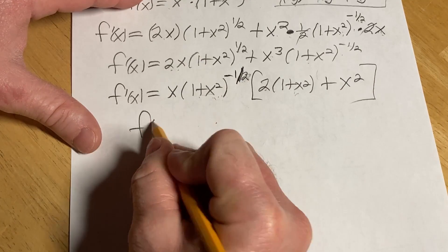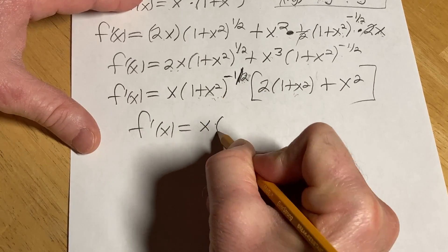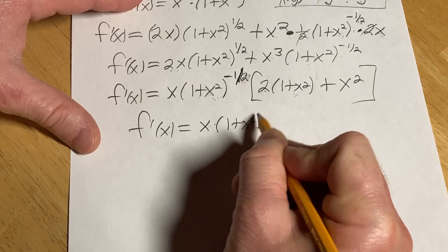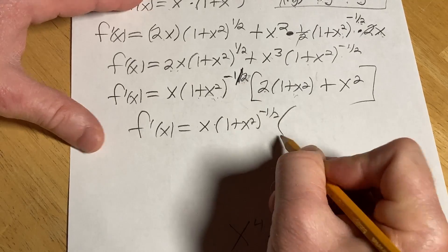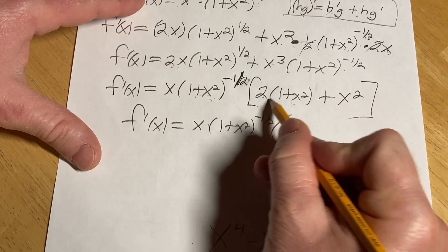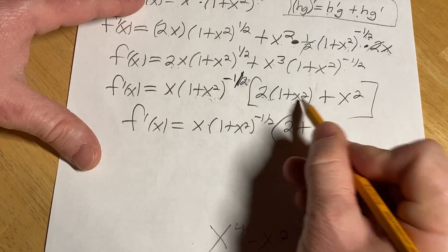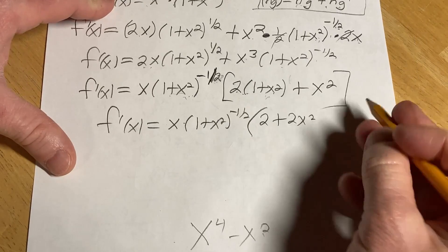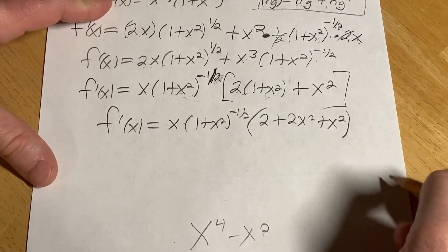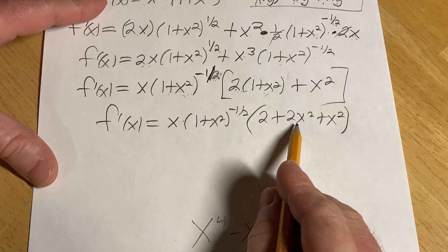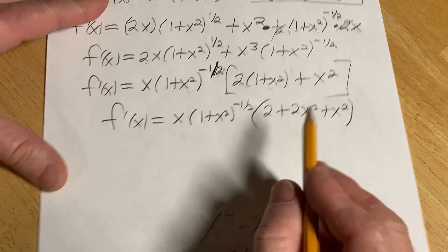So f prime of x is equal to x, parentheses, 1 plus x squared to the negative 1 half, parentheses. And let's see what's going on here. So you have 2 plus 2x squared plus x squared. Beautiful, right? Really nice. Now we can add these x squareds. 2x squared plus x squared is 3x squared.